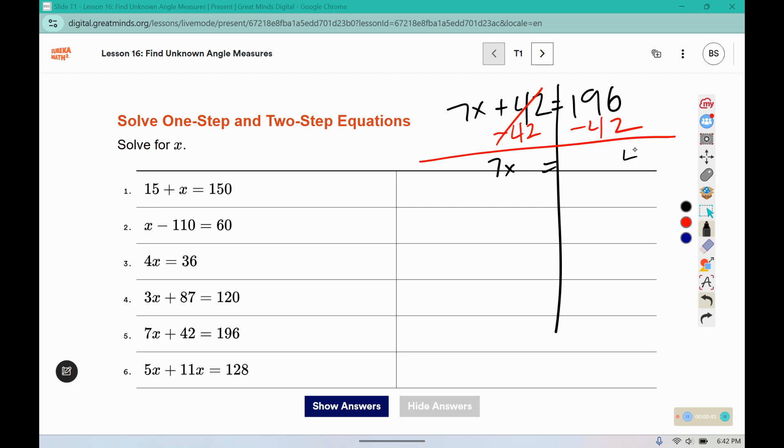6 minus 2 is 4, 9 minus 4 is 5, 1 minus nothing is 1, and then I'm going to divide out the 7. So I don't need to use a negative 7 because I'm not subtracting or adding. That leaves me with x, 154 divided by 7. Well I know it would go into 15 twice, and then 14 twice, so I believe it is 22.